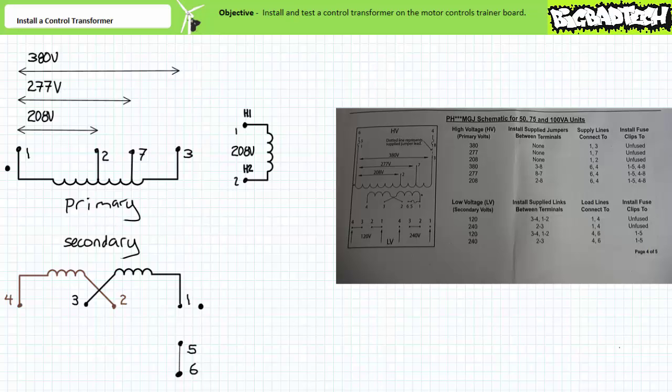Note this particular control transformer can also be utilized for 277 and 380 volt systems if a technician were to make use of the other primary terminals. This versatility allows a manufacturer to distribute this particular control transformer to different customers making use of different voltage schemes or located in different countries.